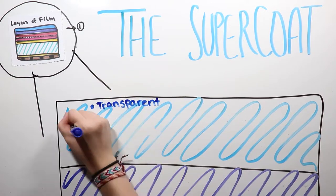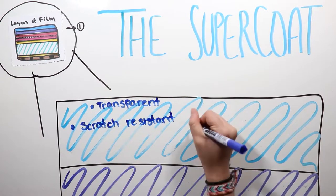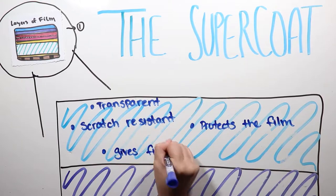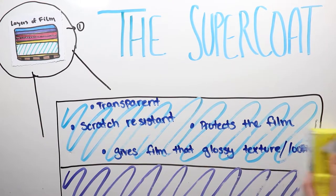In more detail, the supercoat is the top layer of the film. The purpose of this clear layer of hardened gelatin is to protect the emulsion from damage during transport through the camera.